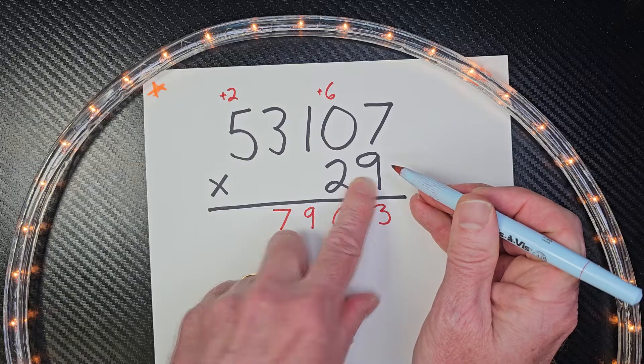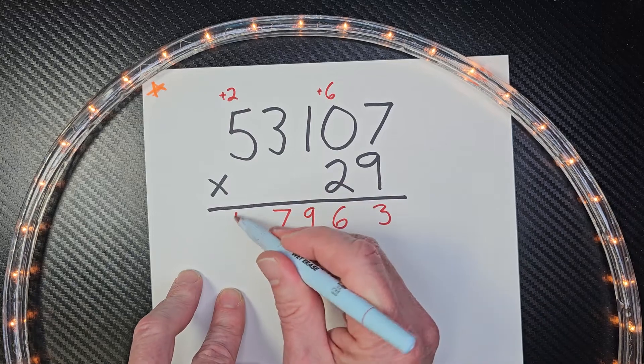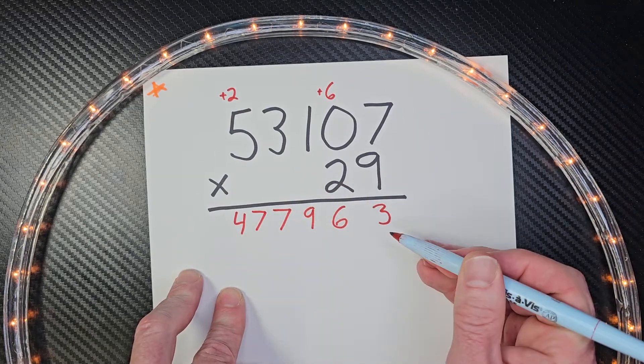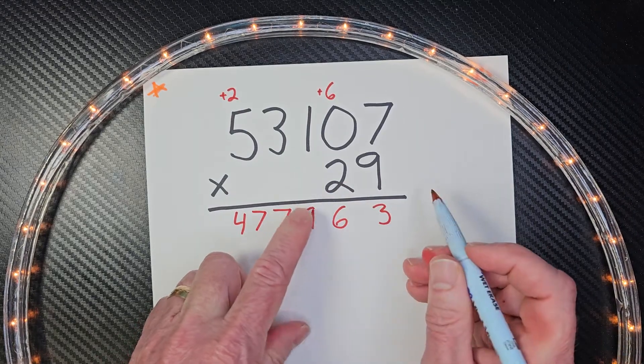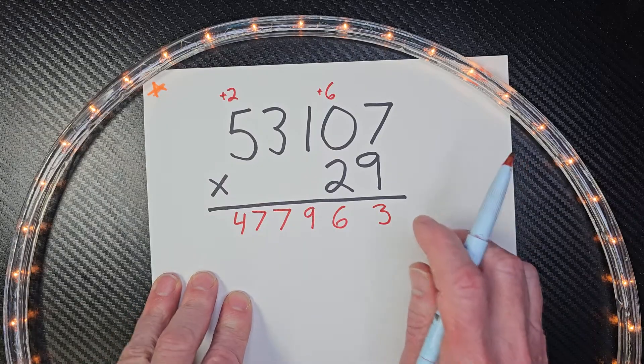And then the last one, we're going to do nine times five is 45, 46, 47, so I put 47 right there. Now it's really important to memorize your multiplication; it just makes this go so much smoother.